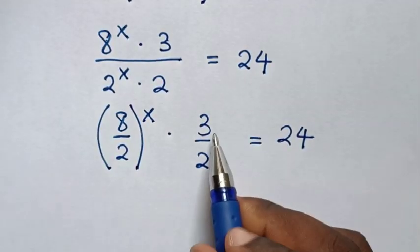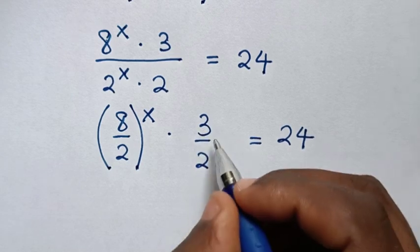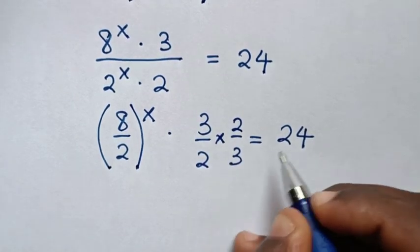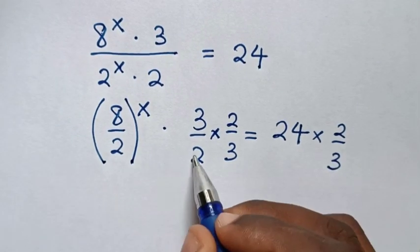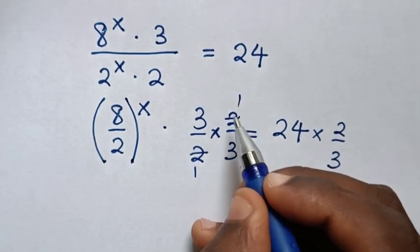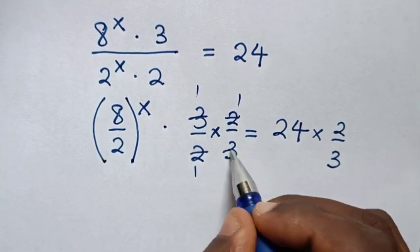Now to remove this fraction, we multiply by its reciprocal 2 over 3 in both sides. So these 2 will cancel by 1 and this by 1, 3 will cancel by 1 and this by 1.